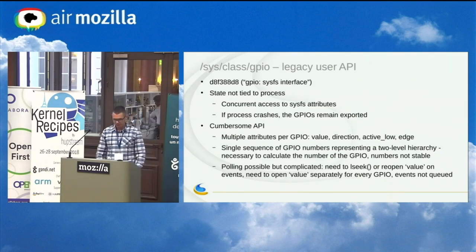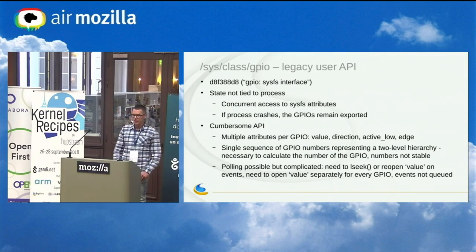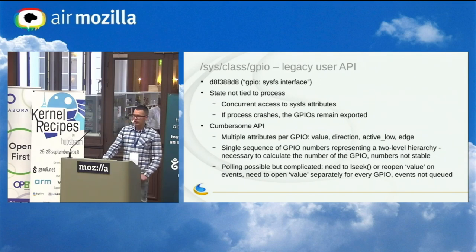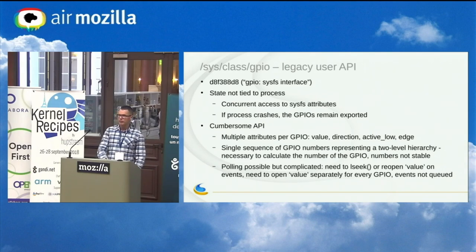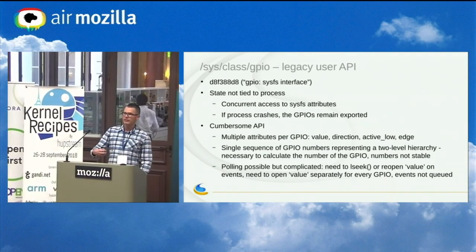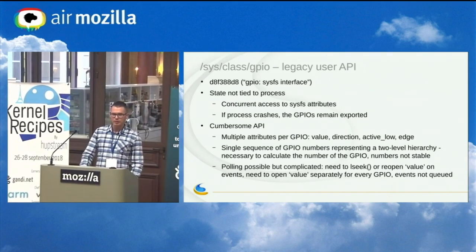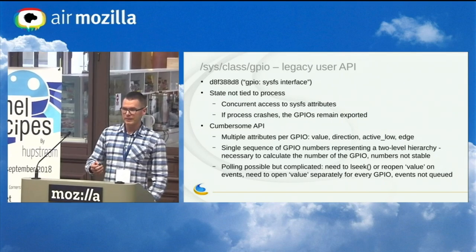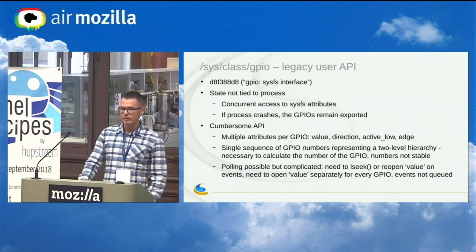Nothing comes back to default. The sysfs API was not very convenient to use — for every line you have a directory with certain attributes, you have to write to different files, read them, compare strings. You also have to rely on the global GPIO number space — the same as the legacy in-kernel framework — a global continuous GPIO number space where you need to know specific numbers. And these numbers can change, because if you have a dynamically loaded module for a GPIO expander, depending on the order in which modules are loaded the numbers can change. This is also a flattened representation of a two-level hierarchy, which is not very convenient.